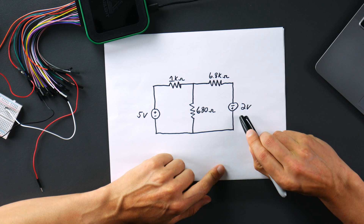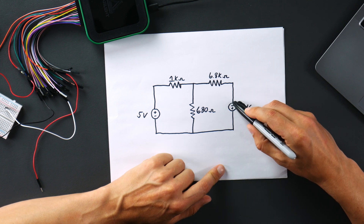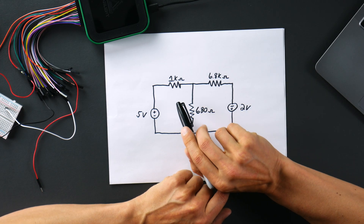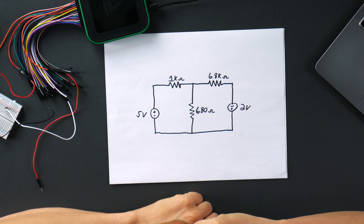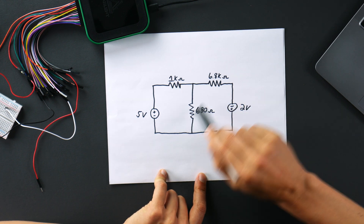Now that we know what the circuit looks like in real life, I've created a diagram here that represents it conceptually — this is how we'll do our calculations. You can see the five volt power supply and the negative two volt power supply, shown with the negative terminal up here and positive down here. You can think of it as a negative power supply or simply that it's inverted. I also measured these resistors, and their nominal values are 1 kilohm, 6.8 kilohms, and 680 ohms, respectively. I set up the breadboard to look as similar to this diagram as possible.